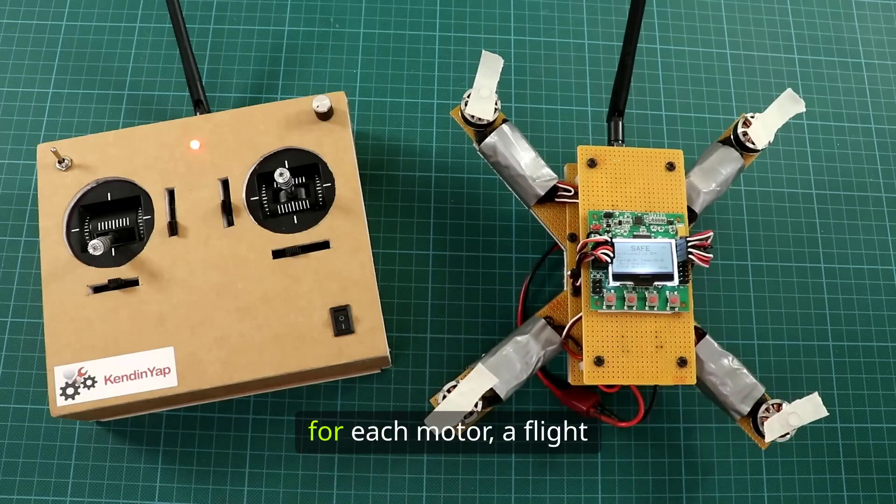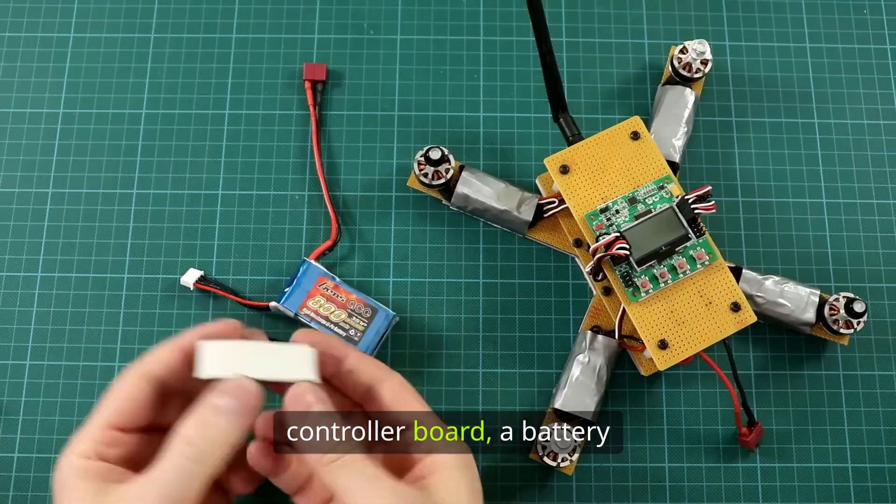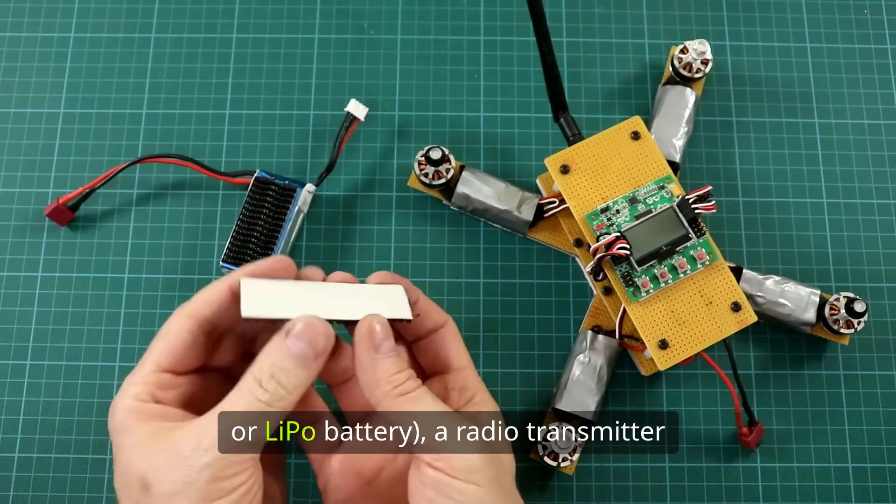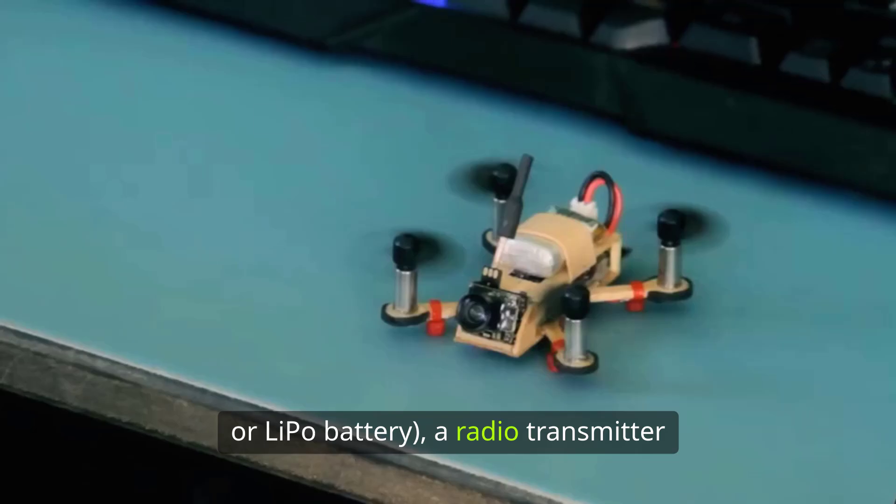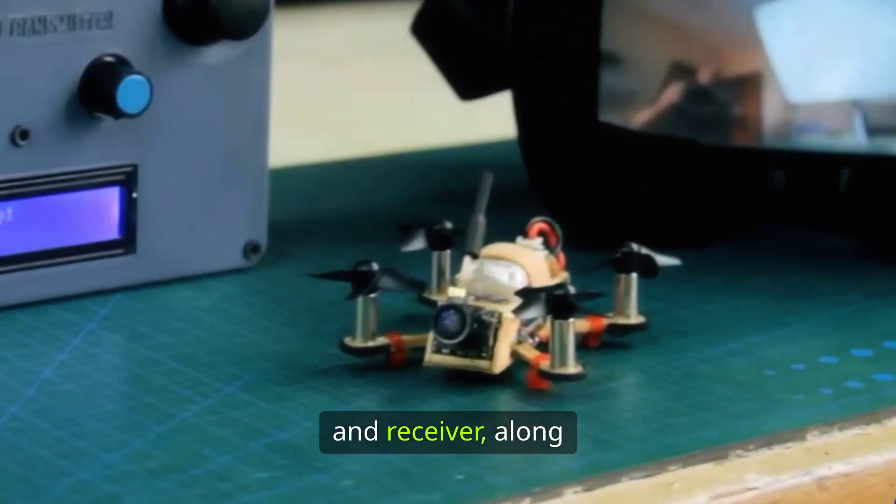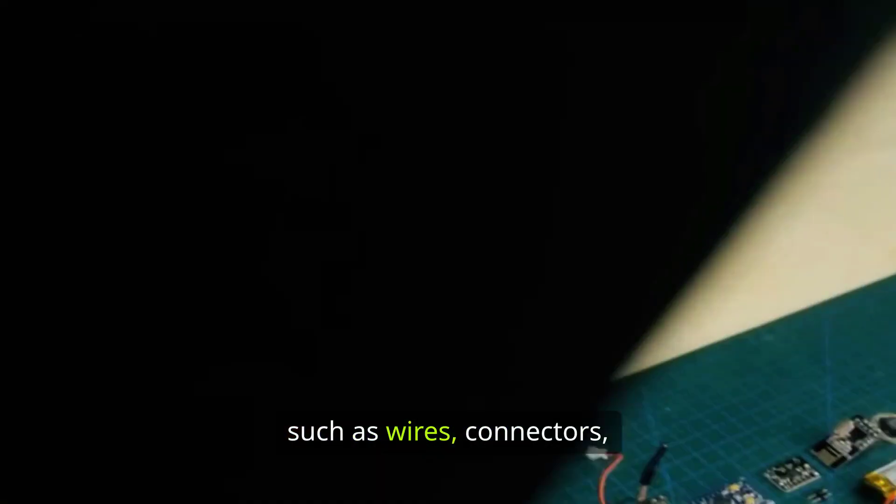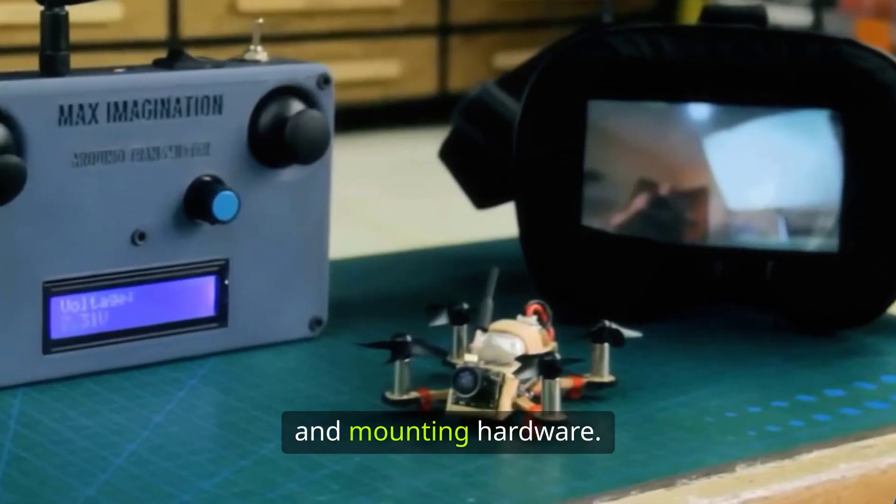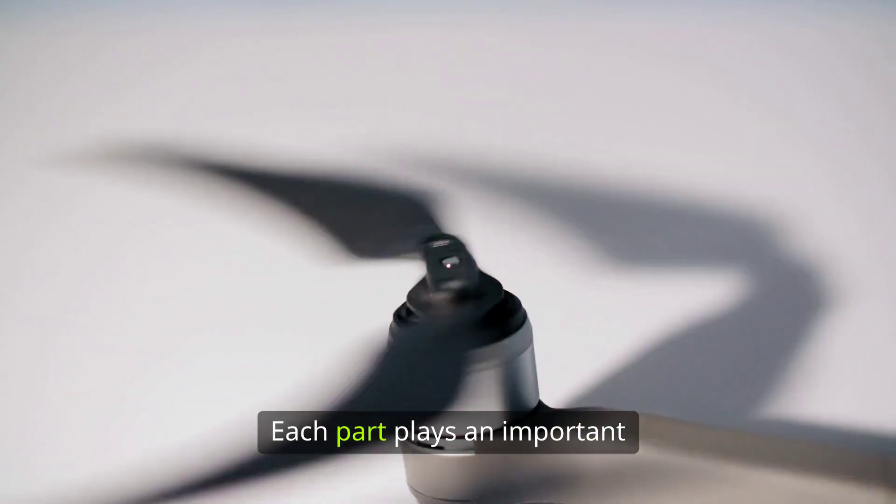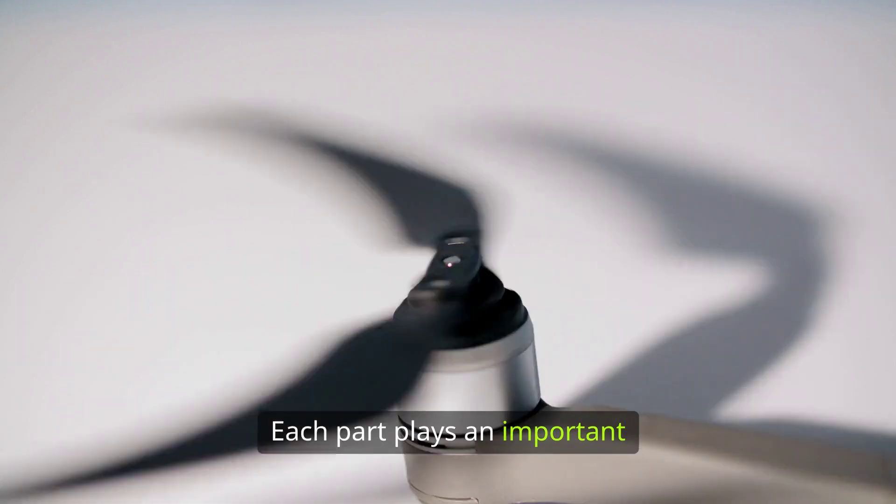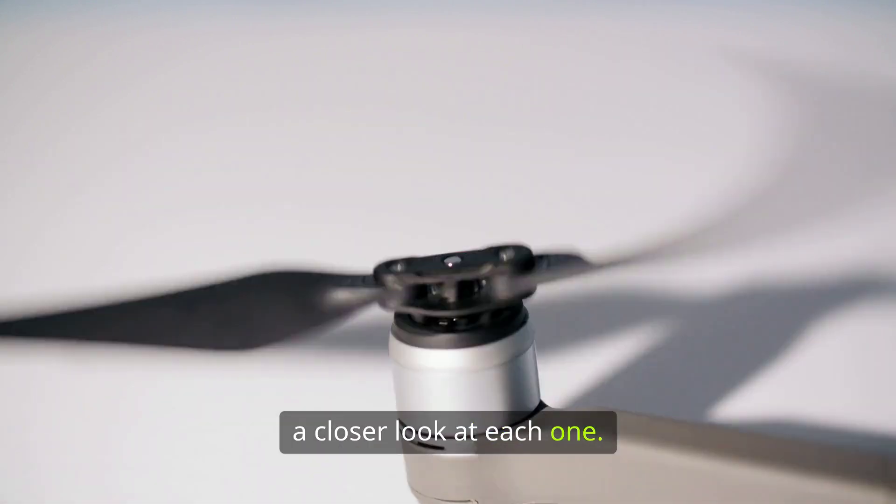one propeller for each motor, a flight controller board, a battery, usually a lithium polymer or LiPo battery, a radio transmitter and receiver, along with some supporting materials such as wires, connectors, and mounting hardware. Each part plays an important role, so let's take a closer look at each one.